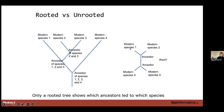Here's an unrooted tree — we don't know where the ancestor is; it could be here, here, or here. If we have a root, we can say this started here, then species four branched off, then species one, then species two and species three. We can get a sense of what the ancestral points are along that tree, which can be very valuable.